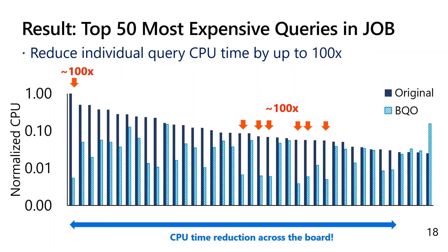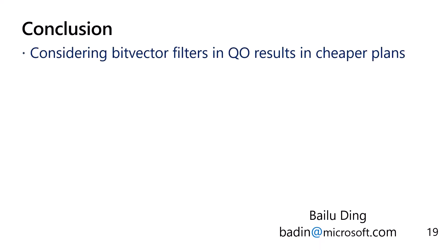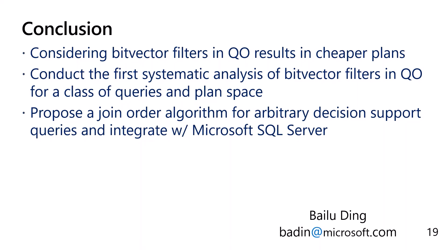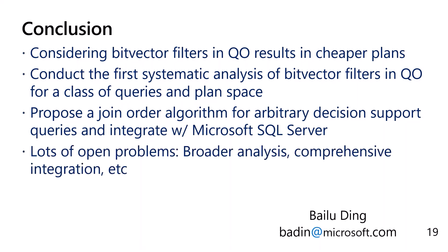We do see some queries have become more expensive, but the number of such cases is small. To conclude, we show that considering bitvector filters in query optimization can yield much better plans. We have done the first systematic analysis of bitvector filters in query optimization for a class of queries and plan space, and we propose a join order algorithm for arbitrary decision support queries. This work opens a new dimension in query optimization, with many open problems including analysis for a broader class of queries and plan spaces, as well as comprehensive integration with different query optimization frameworks.